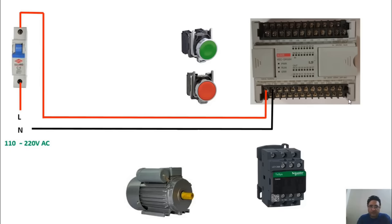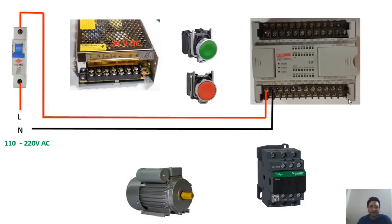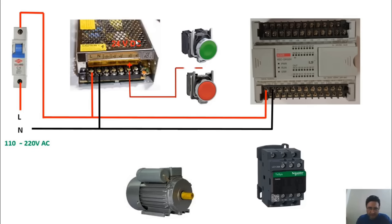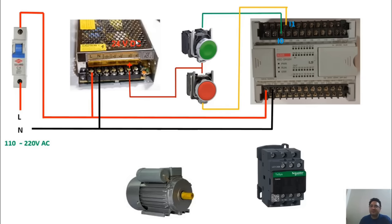For the inputs of our PLC, we need a 24-volt DC power supply. The inputs of the LS-PLC — this part corresponds to our input connections — all accept a voltage level of 24 volts DC. We also connect one phase and one neutral to the power supply. From the positive terminal of the power supply, we connect to our start and stop push buttons. From the other side of the start push button, we take a wire and connect it to the I0 input of the LS-PLC. From the other side of the stop push button, we connect it to the I1 input of the LS-PLC. These I0 and I1 are the same things that we included in the program.